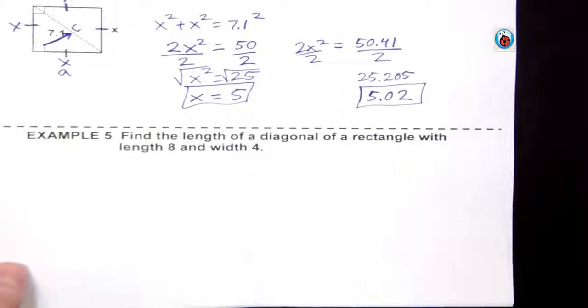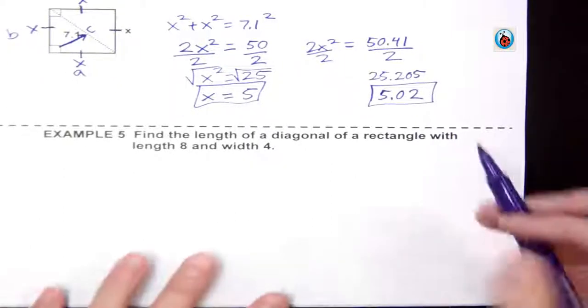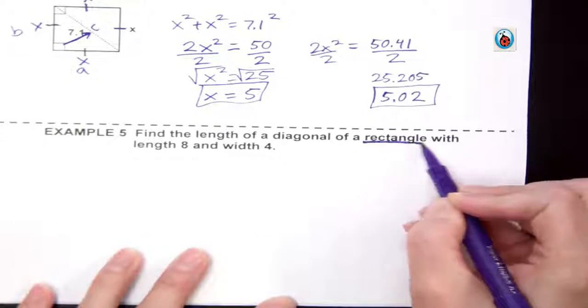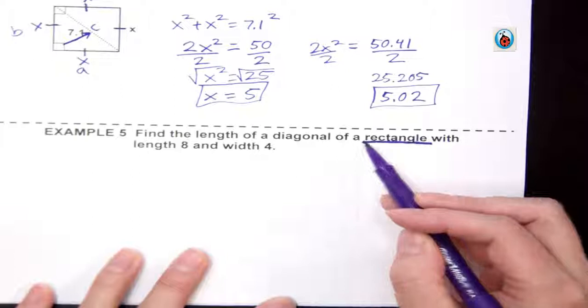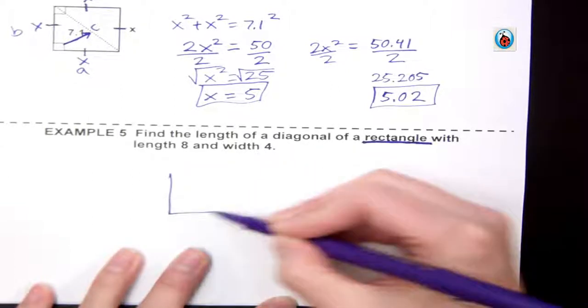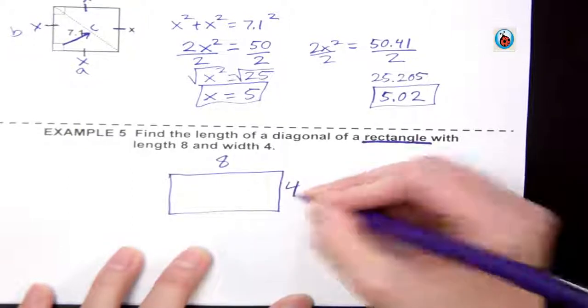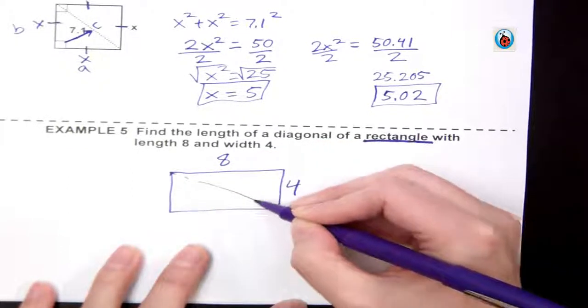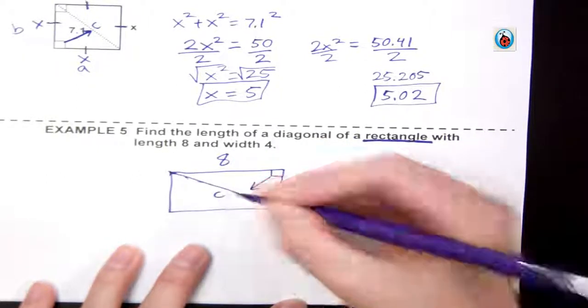Our next example, we have to actually draw a shape. Anytime you have a word problem, your goal is to get it to a non-word problem as fast as possible. When we say find the diagonal length of a rectangle, we start by drawing our rectangle with sides of 8 and 4. Then the diagonal is just the diagonal cross. That's what makes it into a triangle for us. That, of course, is going to be our hypotenuse or our c.